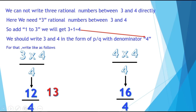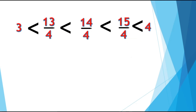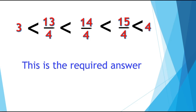Now we can write three rational numbers between twelve by four and sixteen by four. Those are thirteen by four, fourteen by four, and fifteen by four. So the three rational numbers between three and four are thirteen by four, fourteen by four, and fifteen by four. These are the required answers.